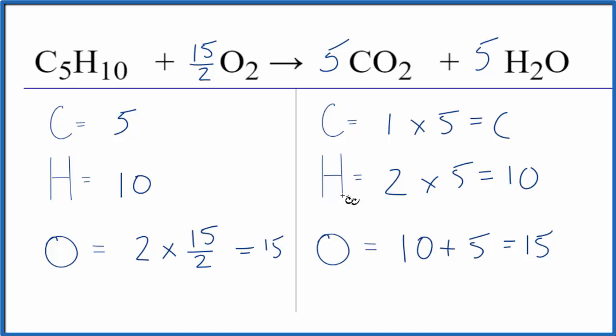Teachers sometimes don't like to have a fraction as a coefficient, but that's not too bad to fix. We could just multiply everything by two, essentially doubling all of our coefficients. That would give us two, and if we double fifteen over two that's just fifteen. This would be ten and this would be ten.